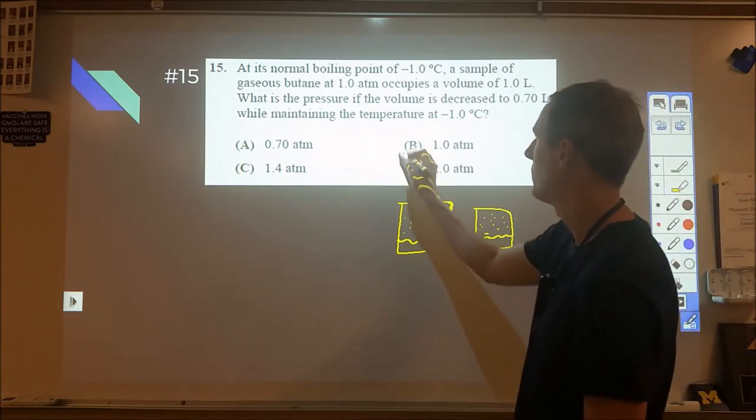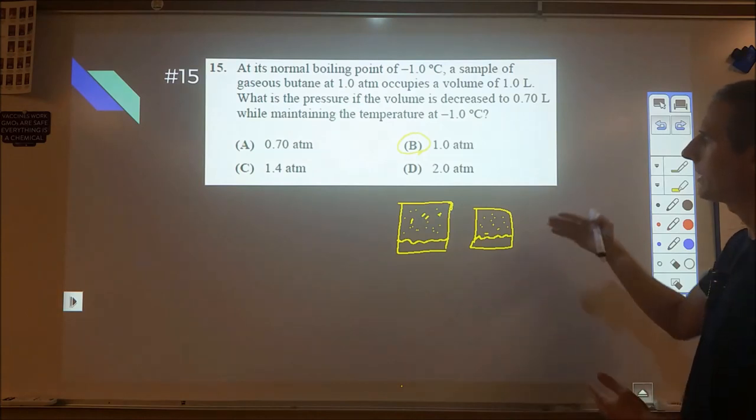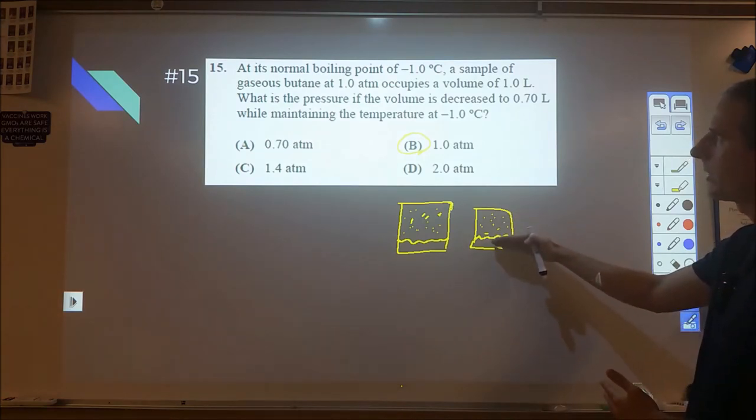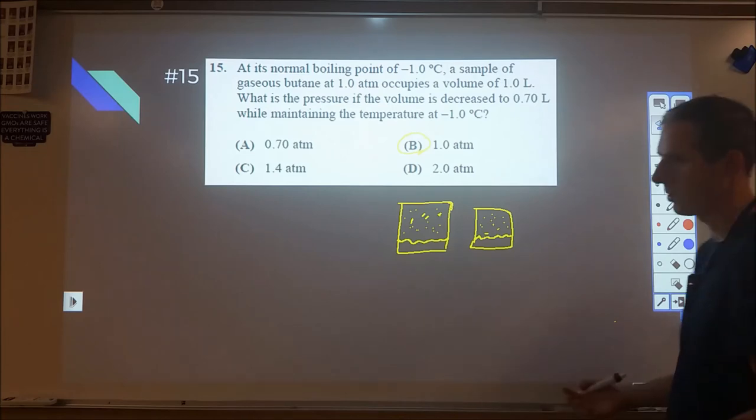Because it's at its boiling point, B was the correct choice for that. So you can't just do a simple Boyle's law for that because of the fact that the liquid is present at its boiling point. Instead, you're going to see the potential for some of the vapor to turn more into liquid.